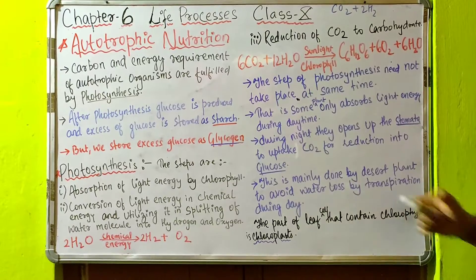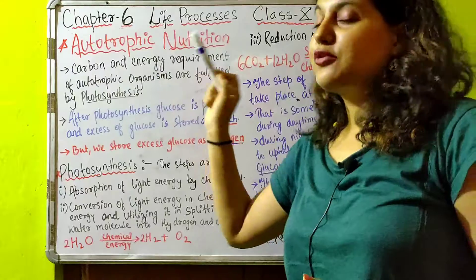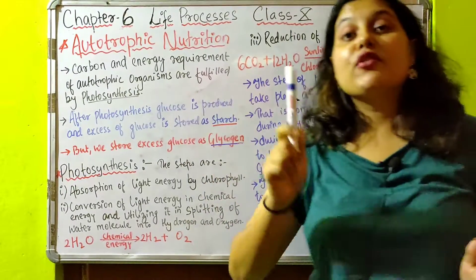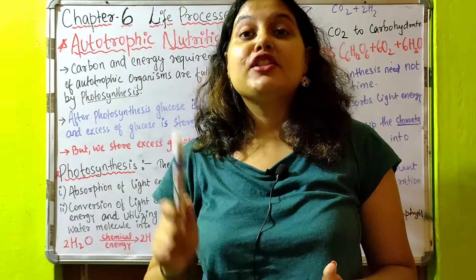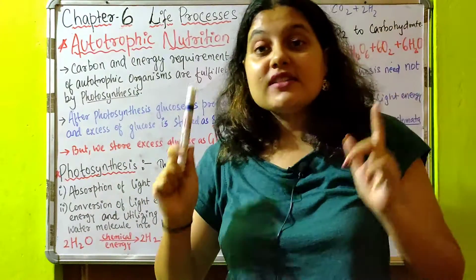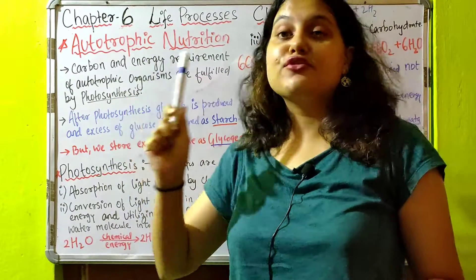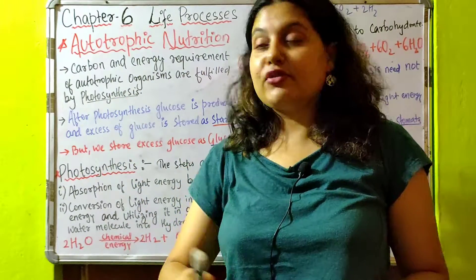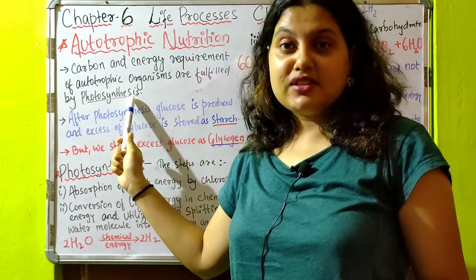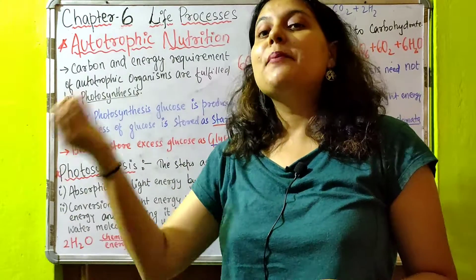The carbon and energy requirements of autotrophic organisms are fulfilled by photosynthesis. Autotrophic organisms are those organisms that can make their own food by the process called photosynthesis. Here, carbon refers to glucose requirement and energy refers to ATP requirement. We, however, fulfill our carbon and energy requirements by taking up plant products.